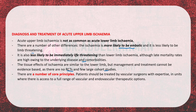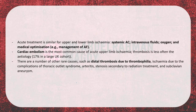Core principles in managing upper limb ischemia include that patients should be treated by vascular surgeons with expertise in units offering the full range of vascular options, both open and endovascular. Initial management is the same as for lower limb ischemia: systemic anticoagulation, intravenous fluids, oxygen, and medical optimization including management of atrial fibrillation. Cardiac embolism is the most common cause of acute upper limb ischemia; thrombosis is a less common etiology at 17% in a large UK cohort.